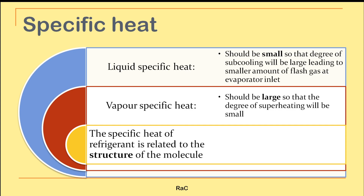The second important property is specific heat. There are two kinds: liquid specific heat and vapor specific heat, because the refrigerant undergoes phase change in both the evaporator and the condenser. Liquid specific heat should be small so that sub-cooling is large, leading to a smaller amount of flash gas at the evaporator. Vapor specific heat should be large so that the degree of superheating will be small.